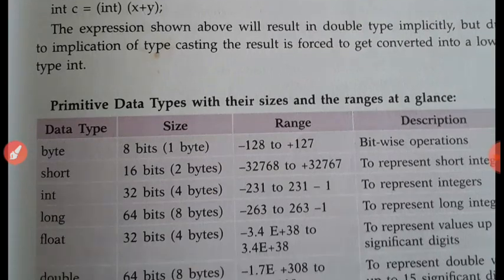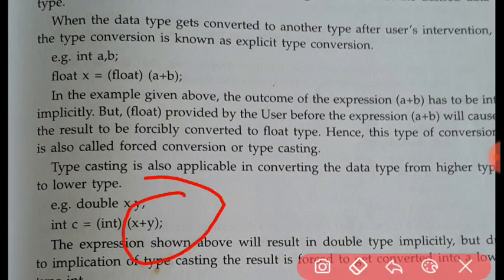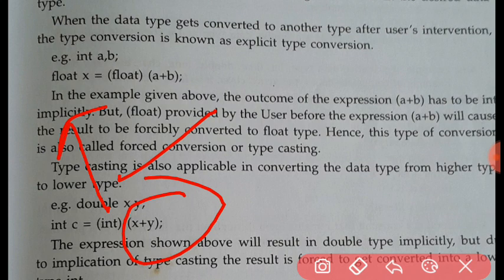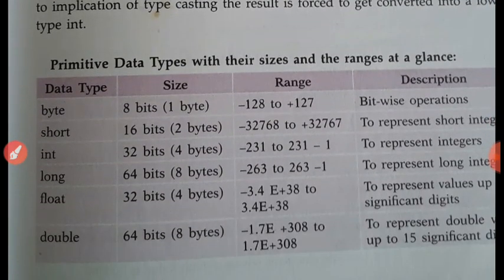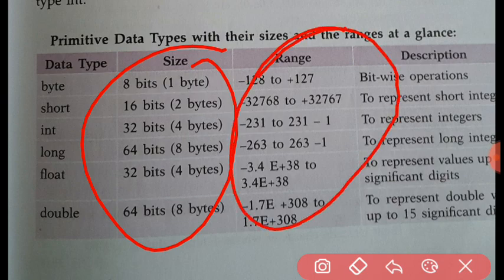Let's see an example. Suppose x plus y — both variables are of double type, but we are converting into the int data type. So this is called explicit type conversion, in which the data type of the result is converted by the user's choice.